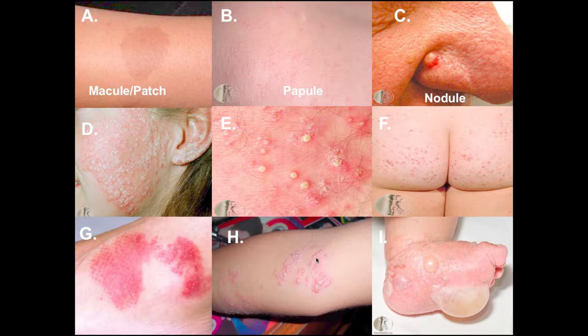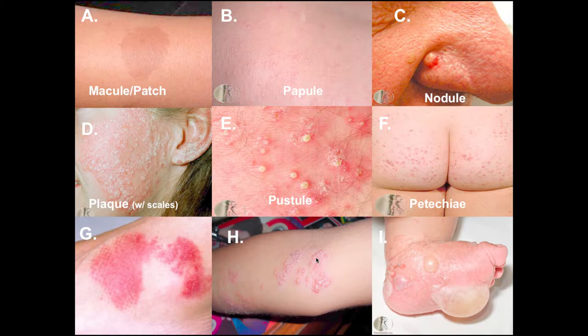A plaque is a circumscribed elevation of skin one centimeter or larger in diameter - it could also be a confluence of papules. E is a pustule - a circumscribed area of skin containing pus. F is petechiae; G, if it's non-blanching, is purpura. H is a smaller version of I, which is bulla.